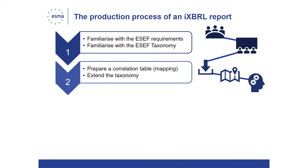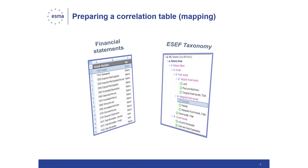The second step in the production process of an inline XBRL report is to prepare a correlation table — that means mapping IFRS financial statements to the ESEF taxonomy and extending the taxonomy if necessary. Preparers are expected to choose for each number in a declared currency disclosed in their primary financial statements the ESEF taxonomy element having the closest accounting meaning to it. This requirement, called Detail Tagging, will come into force in 2020.